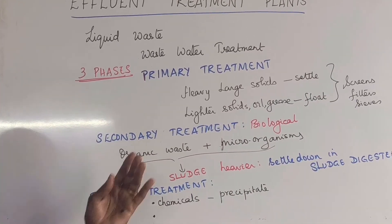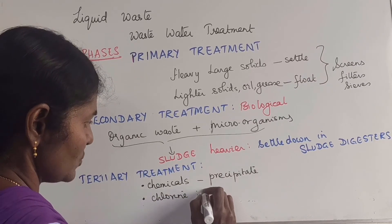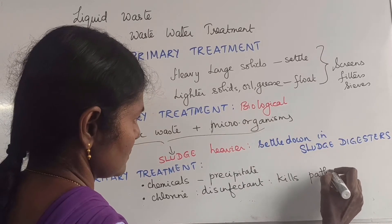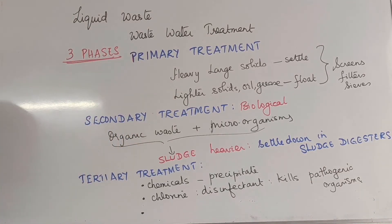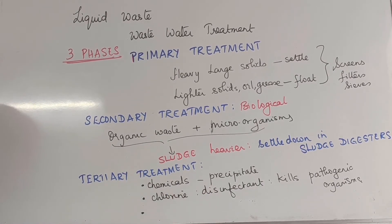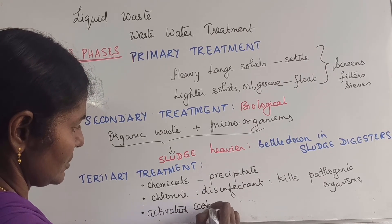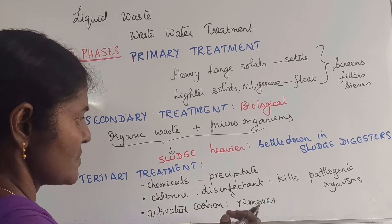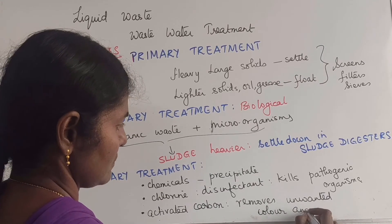The next step in tertiary treatment: there may be certain microorganisms which are disease-causing or pathogenic. So we add something like chlorine, which is a disinfectant, to kill all the pathogenic organisms. The third step is that the waste water invariably would have unwanted colors and bad smell. So we add activated carbon, which has the capacity to absorb all unwanted color and odor.